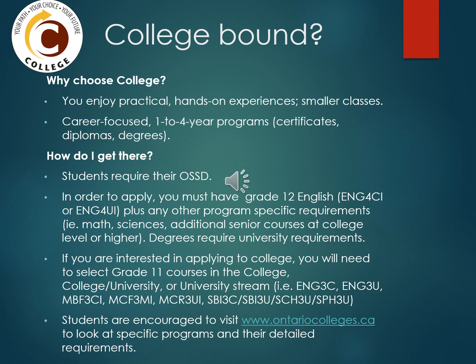Are you thinking about attending college? Do you enjoy practical hands-on experiences and smaller class settings? Are you career focused and looking for a one to four year program — certificates, diploma, or a degree? To get to college, you must complete your Ontario Secondary School Diploma and have grade 12 English at the college or university level, plus any other program-specific requirements including math, sciences, or additional senior level college or higher courses. College degrees require a minimum of six university or university/college level credits. If you are interested in applying to college, select grade 11 courses in the college, university/college, or university stream. Visit www.ontariocolleges.ca to look at specific programs and their detailed requirements.